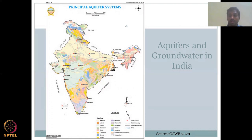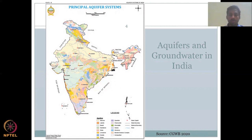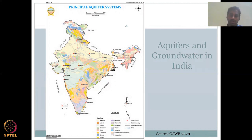Those alluvial aquifers are highly rechargeable compared to hard rock aquifers. The central regions are mostly granite and gneiss — metamorphic formations that do not yield much groundwater because pore space is very limited. The rocks are not as weathered as in the Himalayan regions. Only when weathering happens is there space for water to enter.